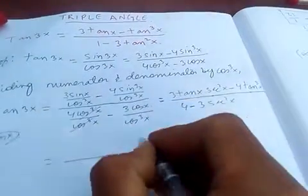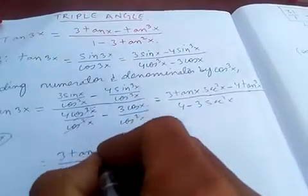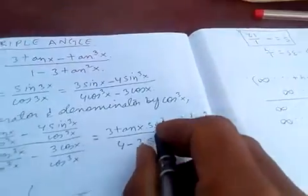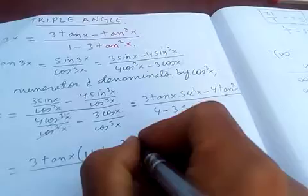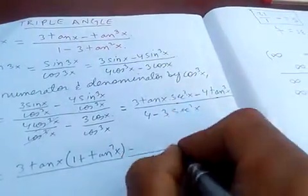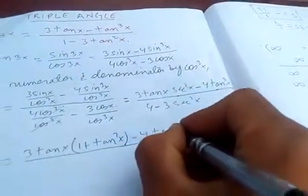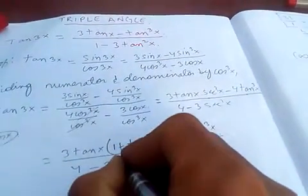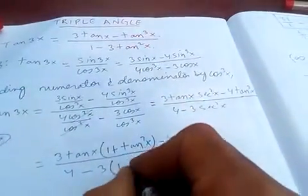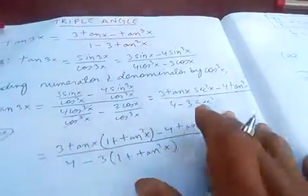So we have 3 tan x. We know sec²x equals 1 plus tan²x, and minus 4 tan x. Over 4 minus 3 sec²x, which is 1 plus tan²x.